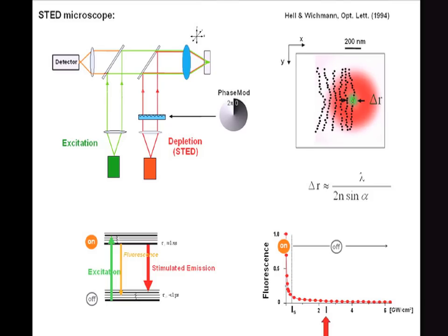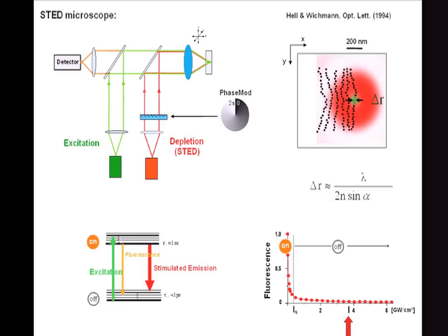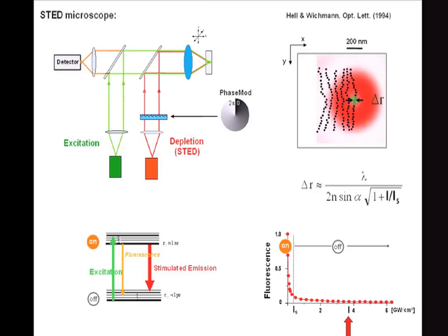Delta R will no longer be described by Abbe's equation but by a different equation. The ratio of the intensity applied at the donut crest with regard to the threshold intensity IS will be in the denominator, because the larger that ratio gets, the smaller delta R will get. If you do the calculation right, it's not just the ratio but the square root of the ratio that really matters. This equation has a slight problem: if the intensity I is zero, we would divide by zero. We can easily fix that by putting in unity — now if I is zero, delta R is Abbe's equation; but if I becomes large over IS, we have a spatial resolution far beyond the diffraction barrier.